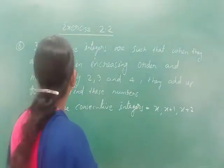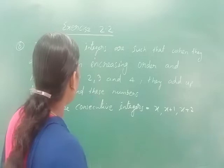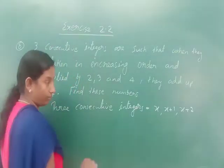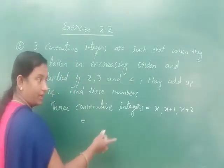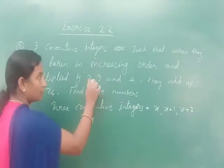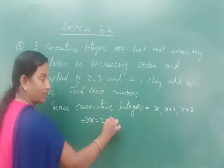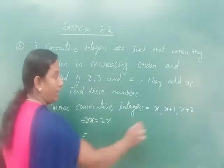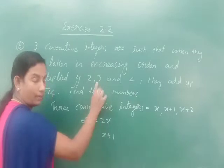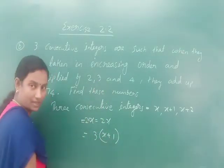Given that they are multiplied in increasing order by 2, 3, and 4. So the first integer x multiplied by 2 gives 2x. The second integer x+1, multiplied by 3.